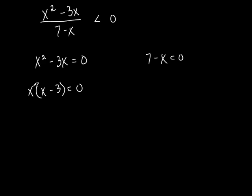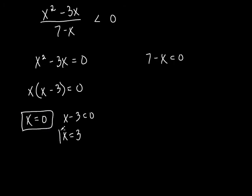Both of these things are being multiplied together and your answer is 0. So we set them both equal to 0: x equals 0, and x minus 3 equals 0, so x equals 3. I'm not circling these — put them in a little box because we're going to come back in a couple seconds. Then over here, solve for x: add an x to both sides, so x equals 7. Put that in a little box.